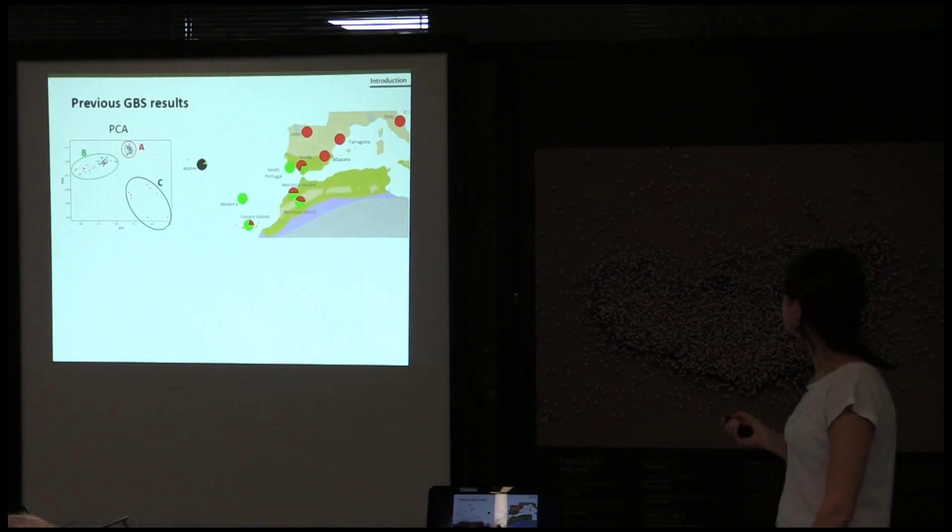Cluster B is mainly in the southern part of the Iberian Peninsula, in Morocco, and the Macaronesian Islands, while the other, cluster A, is in the northern part of this distribution.